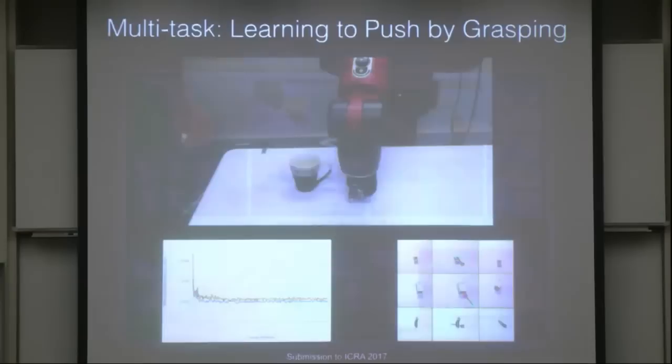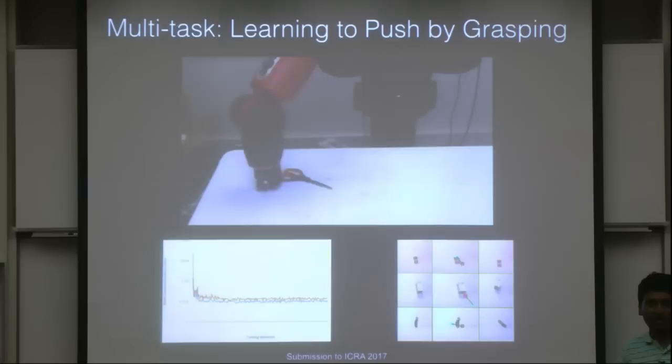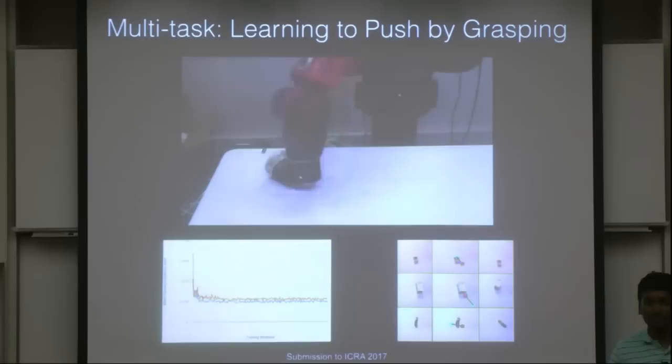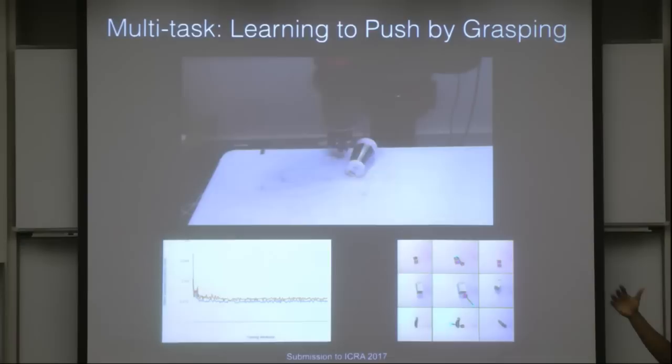The next work is on multitask learning. If you want to learn a completely different robot task in a data-driven fashion, do you again have to collect 50,000 examples and run it for hours? One alternative is to use data from different robot tasks to supplement your own task. In this work, we're trying to show that by using data from the grasping task, we can actually try to do something else, like pushing objects around. This work is still in progress.